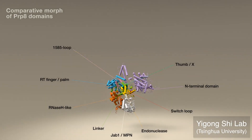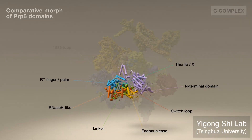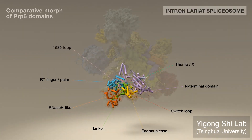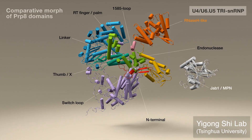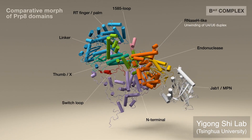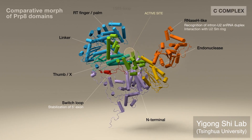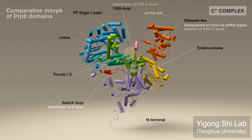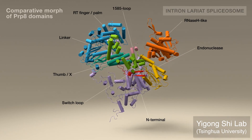A comparative morph of PRP8 domains visualizes functional insights into the central hub and scaffold. The RNase H-like, JAB, switch loop, and N-terminal domains first undergo pronounced rearrangements, reflecting unwinding of the U4-U6 duplex, stabilization of the 3' exon, and formation of the active site. The RNase H-like domain then moves to recognize the intron U2 duplex while coordinating with proteins at the active site. It then acts to displace the duplex, allowing insertion of the 3' splice site. Finally, its movement and that of the switch loop culminates in the release of the 5' exon and mRNA.